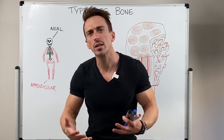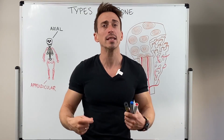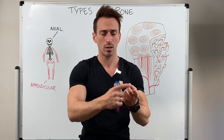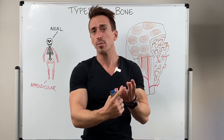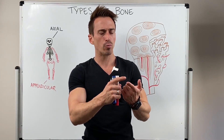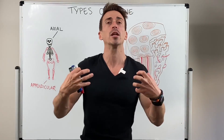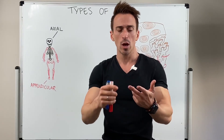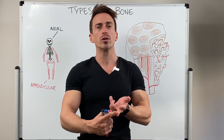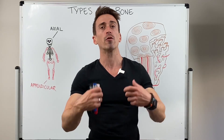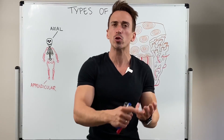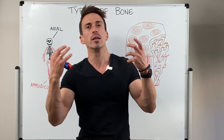The skeletal system is a collection of 206 bones, at least in the adult, that play really important roles when it comes to protection, storage, and support. When it comes to protection, it protects underlying structures or organs. When it comes to support, it supports the weight of the body and the muscles attached to it to allow us to move. It also plays an important role in storage, because it stores important minerals like calcium and phosphate.